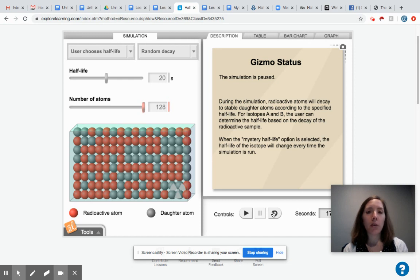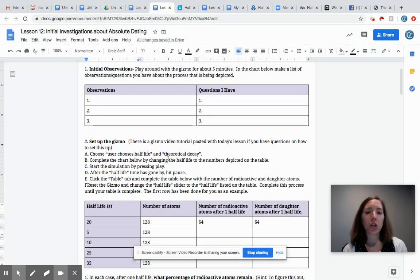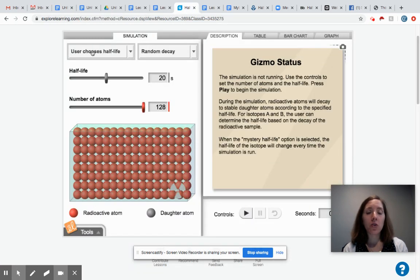So after you've played along with it you want to reset it so it's back to what it was at the beginning. Then you're going to set up the gizmo. First thing says choose user chooses Half-Life and theoretical decay. So if you look back, user chooses Half-Life probably will already be selected and you're going to change this to theoretical decay.